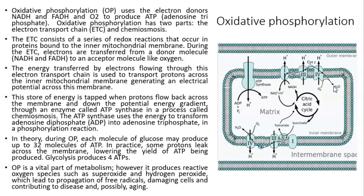The energy transferred by the electrons flowing through the electron transport chain is used to transport protons across the inner mitochondrial membrane, generating an electrical potential across the membrane. Hydrogen ions are transported from the matrix to the area between the two membranes, accumulating more hydrogen between the membranes than in the matrix. This is a store of energy.